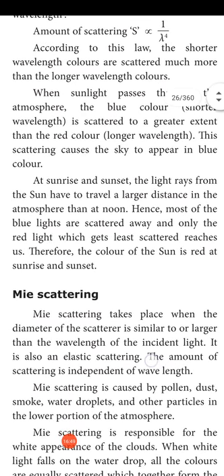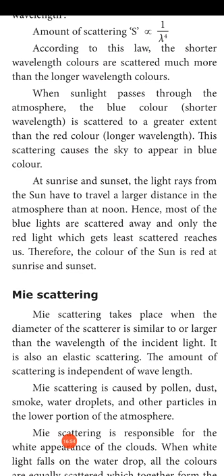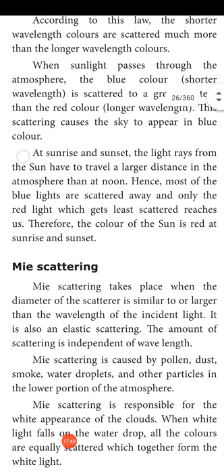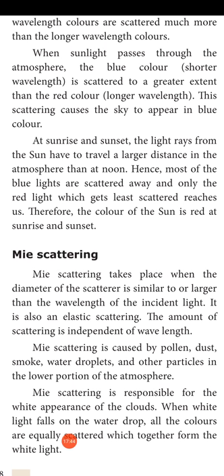At sunrise and sunset, the light rays from the sun have to travel a longer distance in the atmosphere than at noon. Therefore, most of the blue light is scattered away and only the red light, which gets least scattered, reaches the Earth. So the color of the sun appears red at sunrise and sunset.